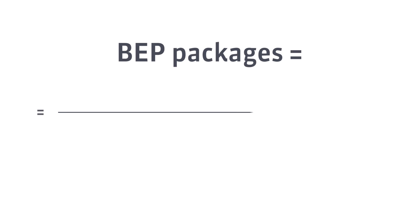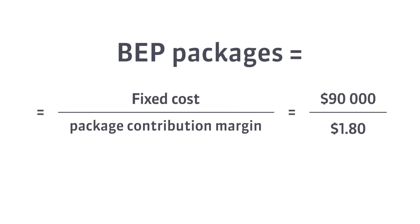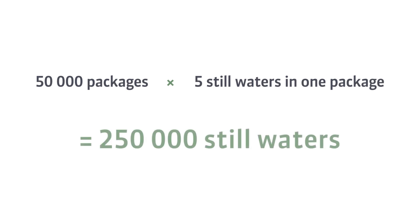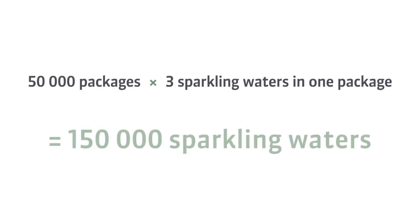The break-even point is 50,000 packages. To reach break-even, the company must sell 50,000 packages, which means selling 250,000 units of still water and 150,000 units of sparkling water.